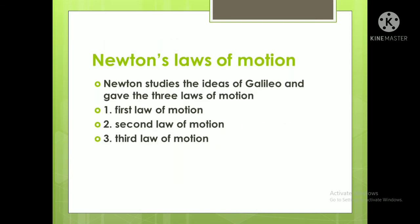Now we will talk about Newton's Laws of Motion. All of Newton's laws of motion were originally given by Galileo. Galileo was a natural philosopher who had interest in mathematics and discovered many things — he spoke about the planets and how they orbit around the sun. Newton took the main ideas from Galileo and derived three laws: the First Law of Motion, the Second Law of Motion, and the Third Law of Motion. We will now study them one by one.